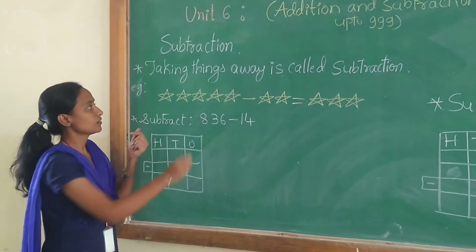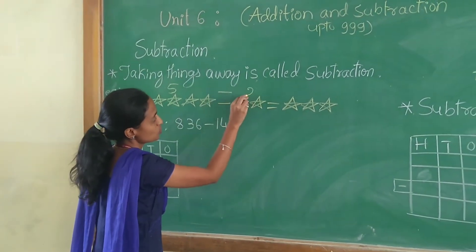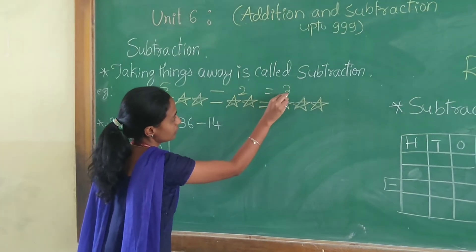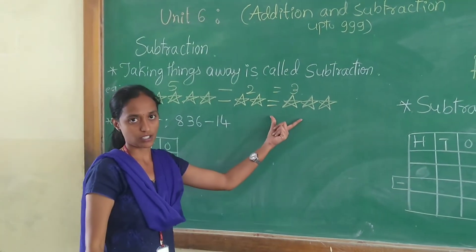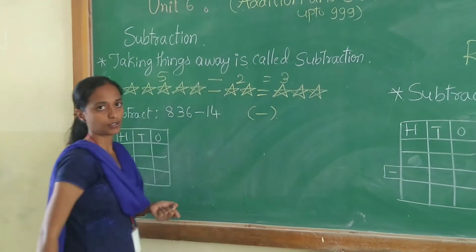So when you subtract 5 minus 2, you will get 3. This is called subtraction. The sign used for subtraction is minus.